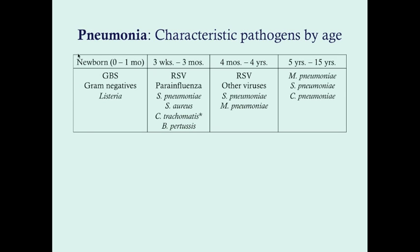We're not going to be talking about the newborn here because the causes are completely different. With newborns, the number one cause is group B strep, also gram negatives, and listeria. Remember, with listeria it's the very young and the very old — 65 years of age or older — where we really consider listeria as a possibility. This is important because the empiric antibiotics we give the general population do not cover listeria. In very young patients and the very elderly, we consider listeria, but we're not talking about newborns here.